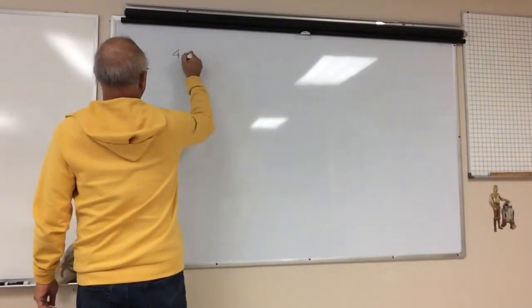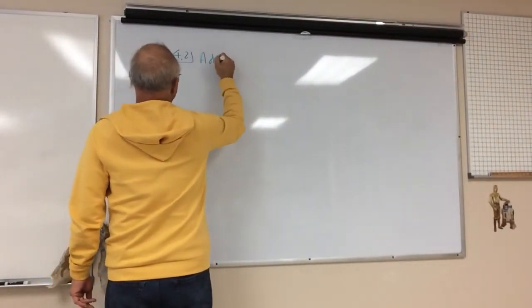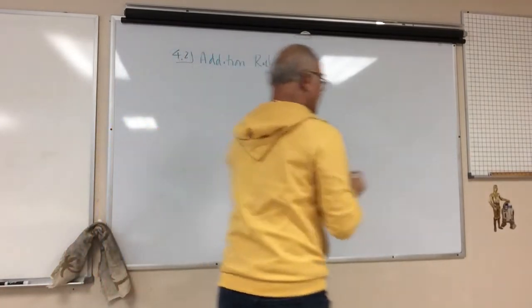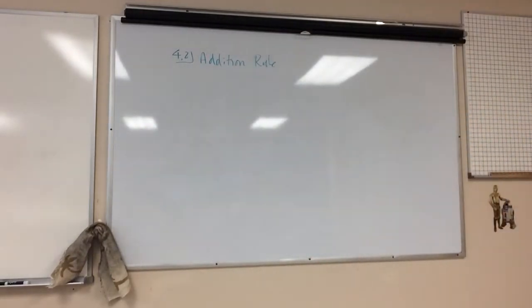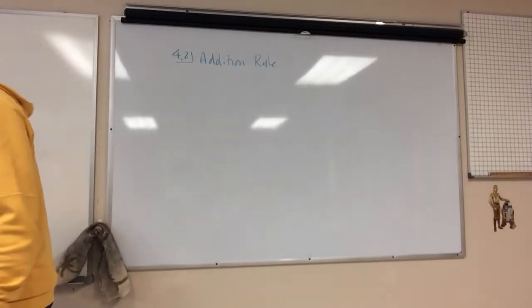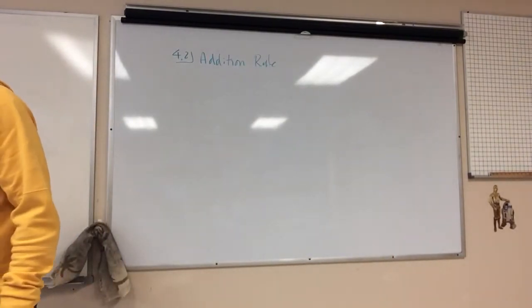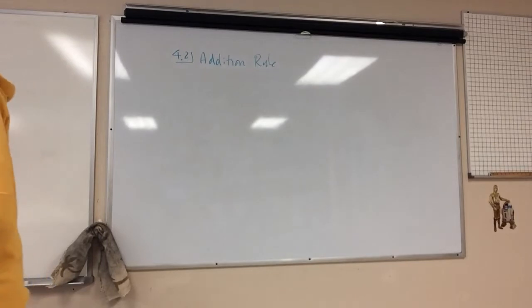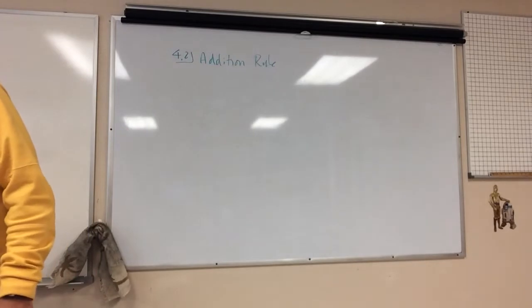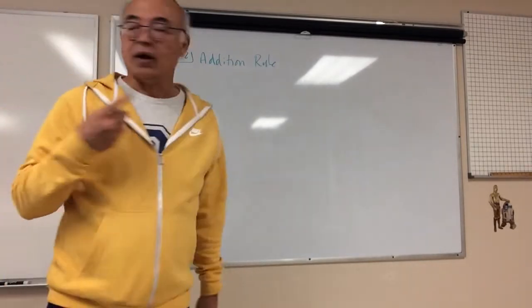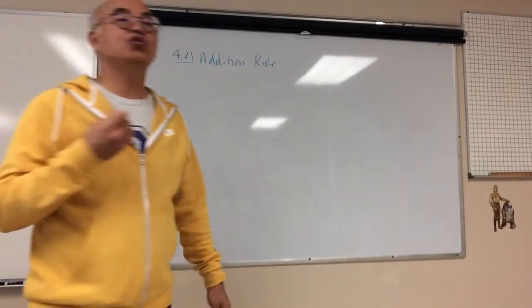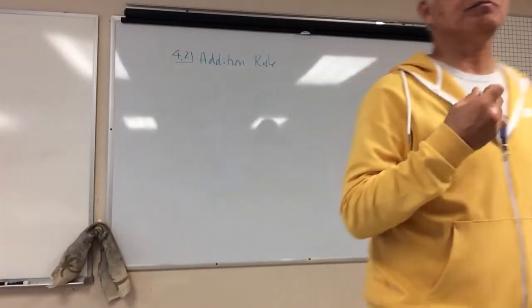Okay, 4.2 addition rule. You have actually learned this before, but you have not learned it as the addition rule. So let's see, we're on page 148. There's a definition above the addition rule. It says a compound event is any event combining two or more simple events.